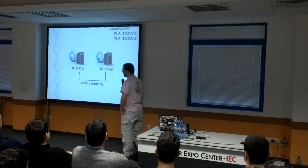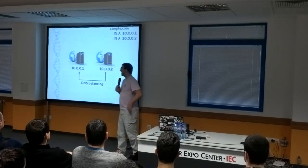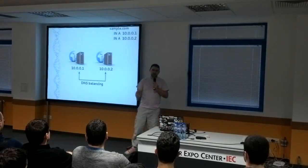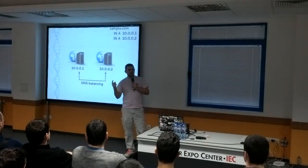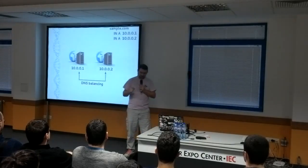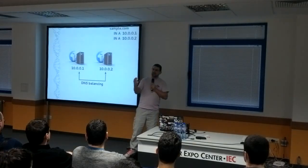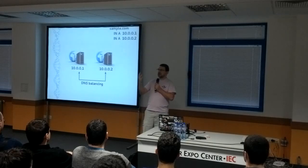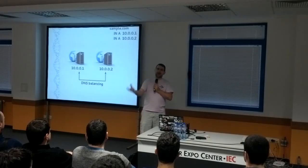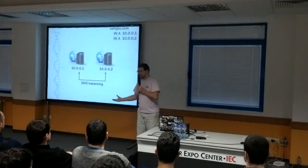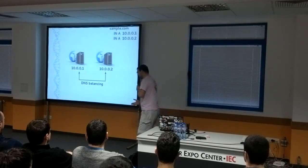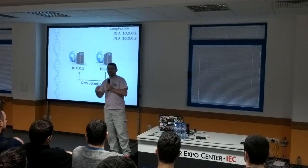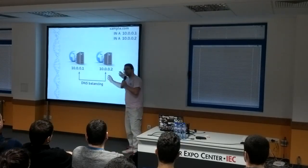Now let's look at load balancing from the beginning. Usually when you're defining a load balancer, you'd be thinking about one machine, but most probably you shouldn't. Because if one machine is the center of your infrastructure, it means that this is a single point of failure. When it dies, all of your infrastructure dies.